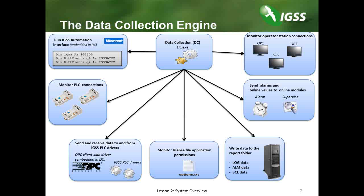The data collection engine also ensures that the number of objects configured for the system are present in the license file — called Options Text on our system. Data to and from IGSS PLC drivers is sent and received by the DC engine. Among the drivers, we have OPC client-side drivers and, of course, OPC server functionality embedded in the DC engine. The DC engine also ensures that PLC connections are stable and running, and ensures the running of the automation interface, for example if VBA code is included in the project. As you can see, the data collection engine is one of the backbones of the IGSS system, and the DC must be running for IGSS to function.